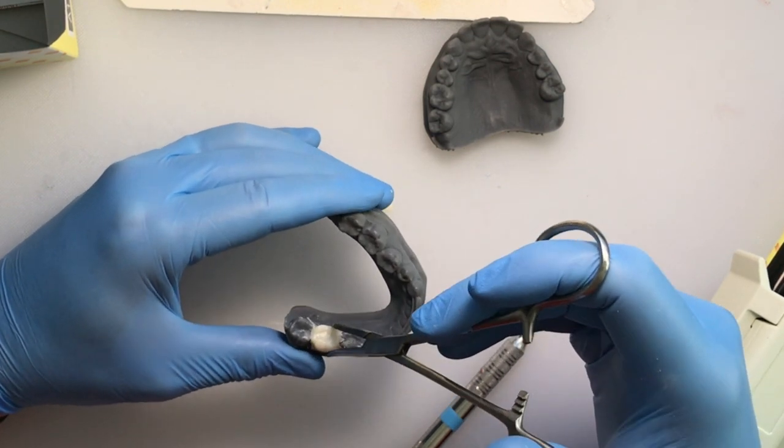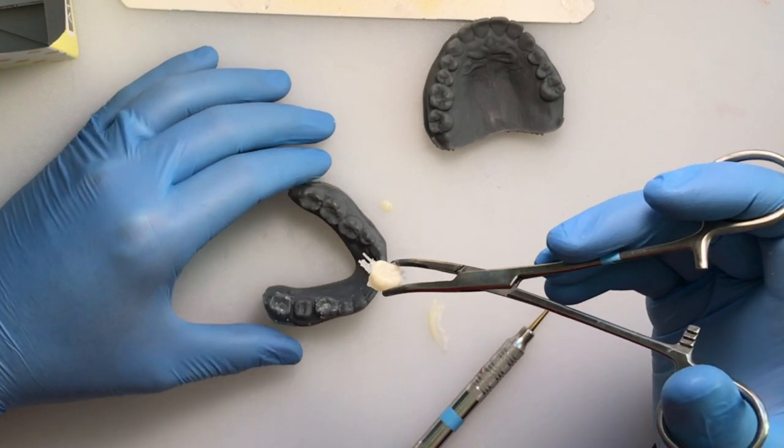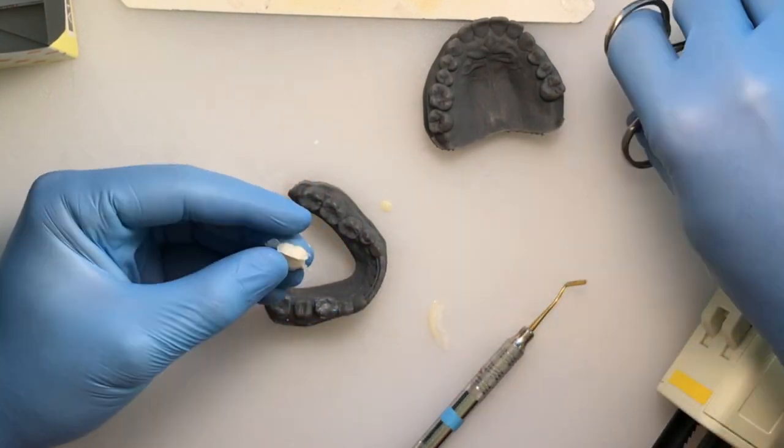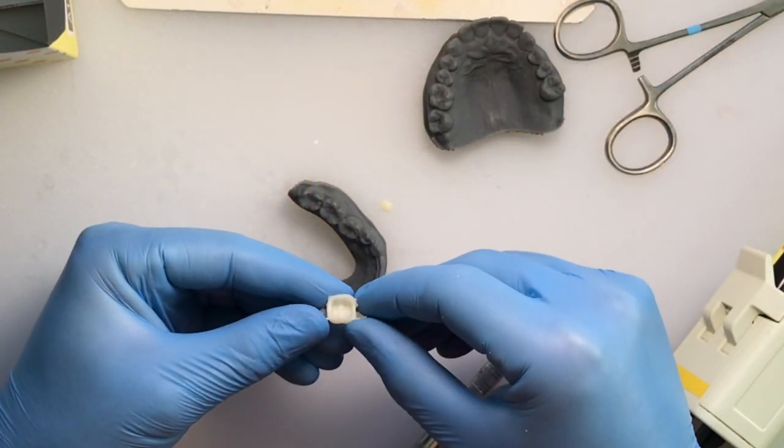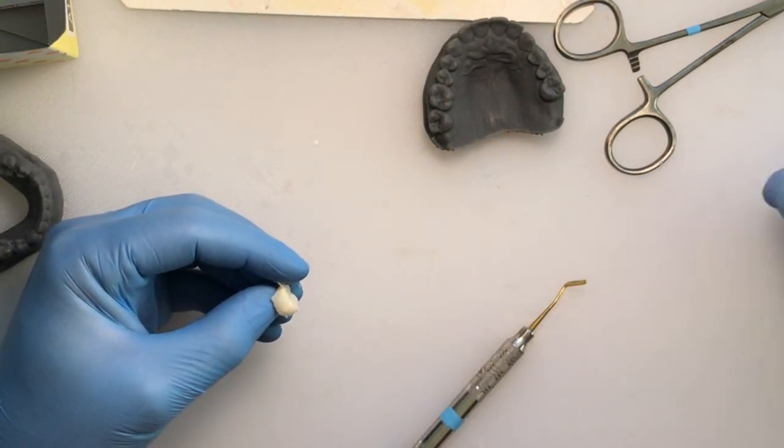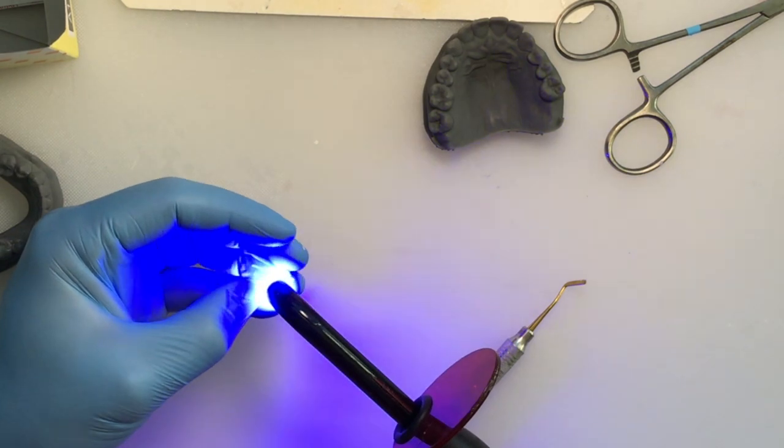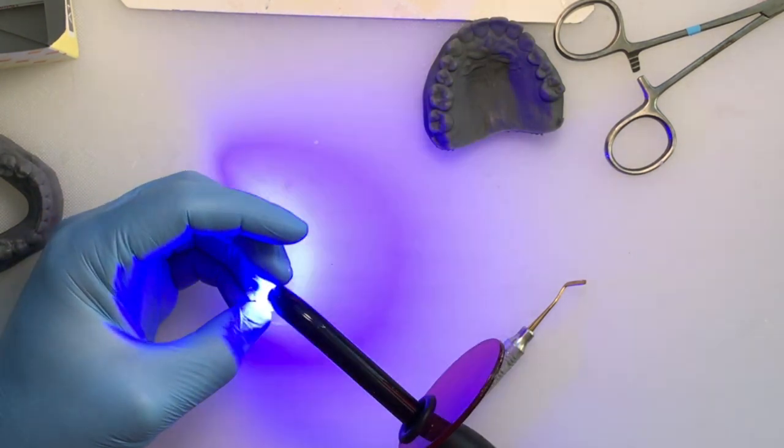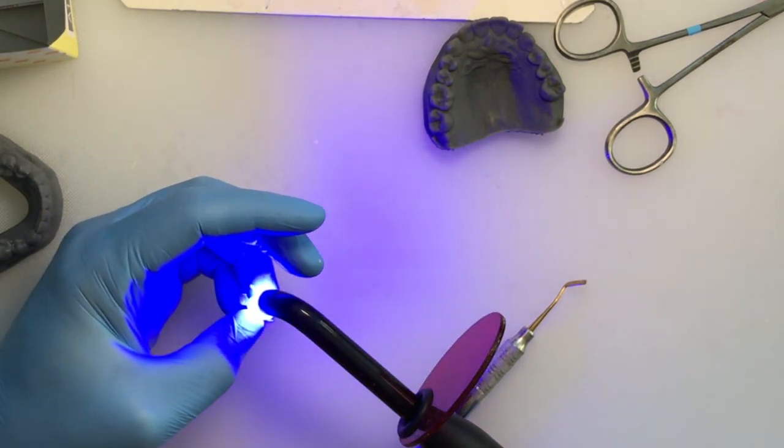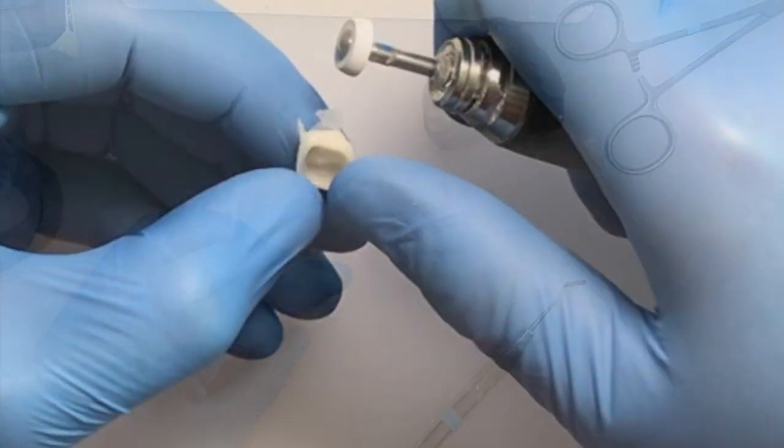Some people use a Moore sandpaper disc. I like a silicone, an aluminosilicate wheel in a lab handpiece. It gives me great control. Again, you can cure it just to make sure everything is set and ready to go.